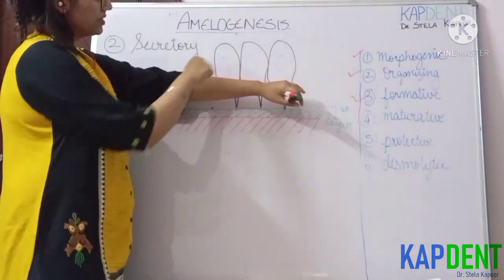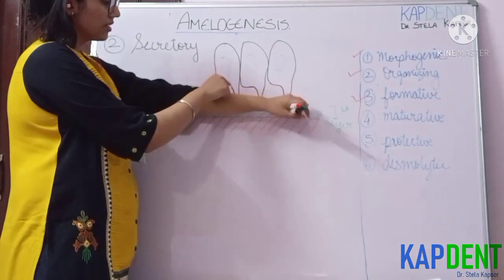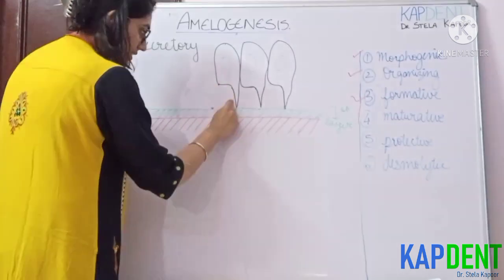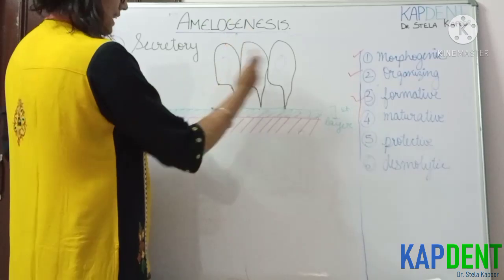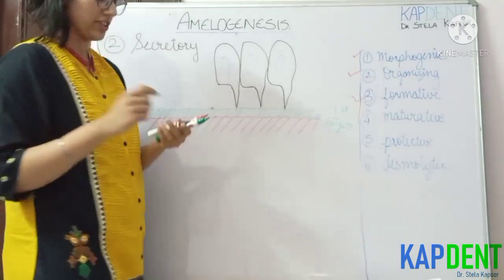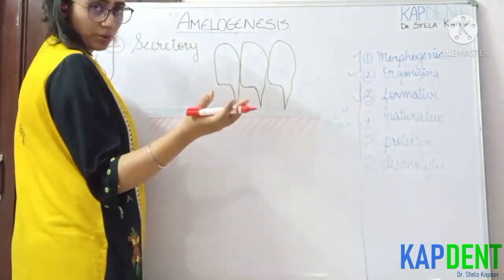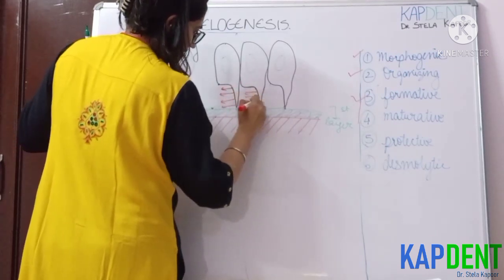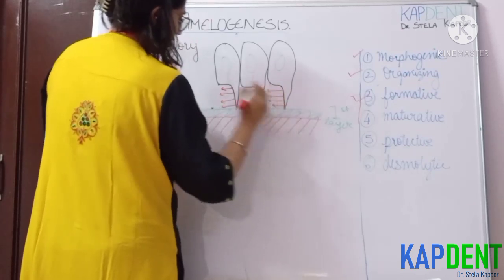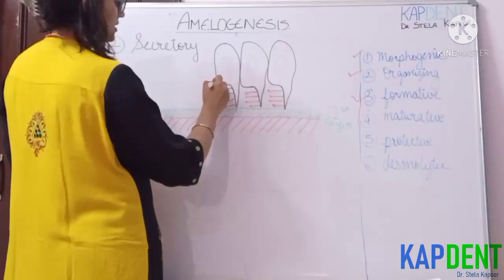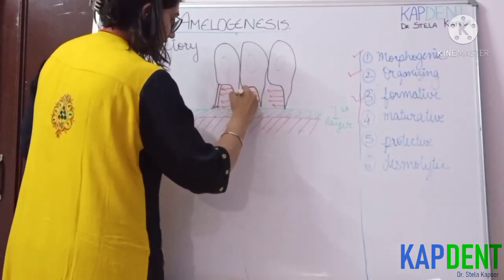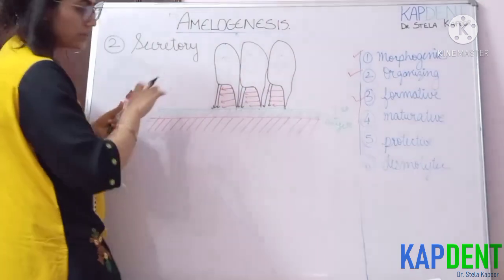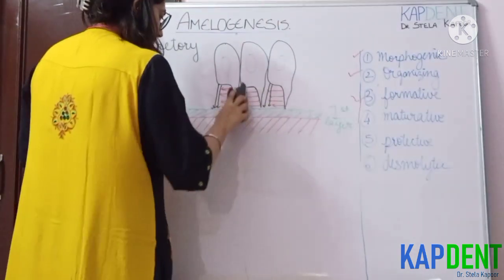After the deposition of the first layer of enamel, the proximal process of the Tomes' process gives out a distal process. Since the proximal and the distal portions are both facing in different directions, the enamel deposited by them is also facing different directions. The enamel matrix protein deposited by the distal process forms the enamel rod, while the enamel deposited by the proximal process forms your inter-rod substance.